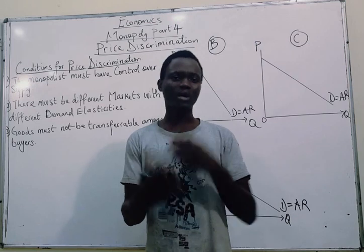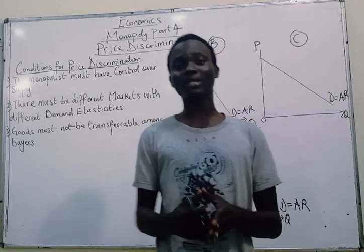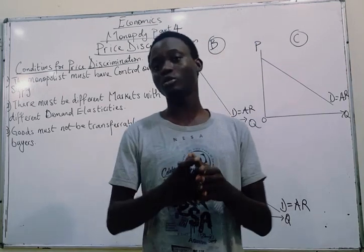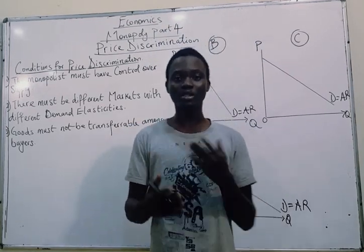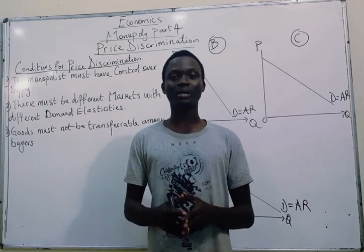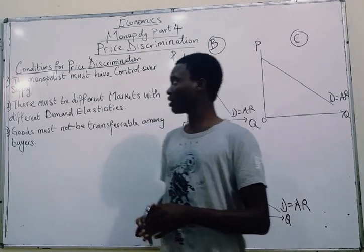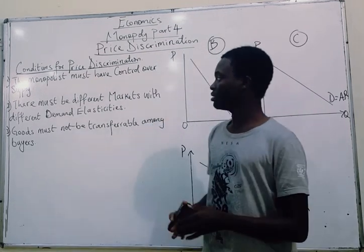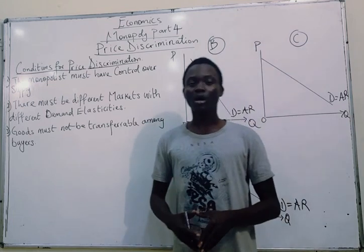There are conditions for price discrimination because not every firm can discriminate in terms of prices. The first condition is: the monopolist must have control over supply.